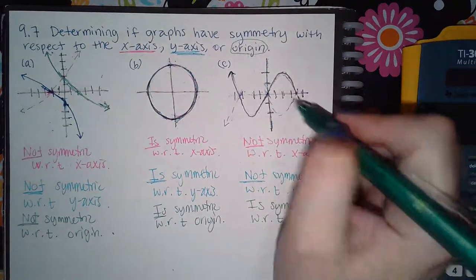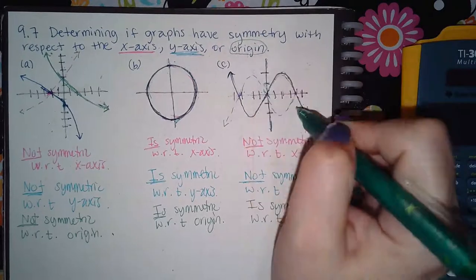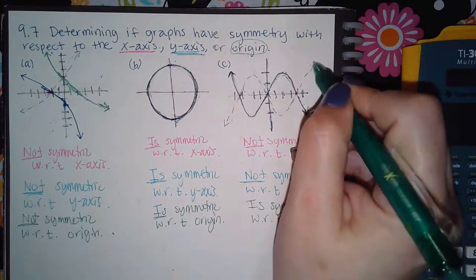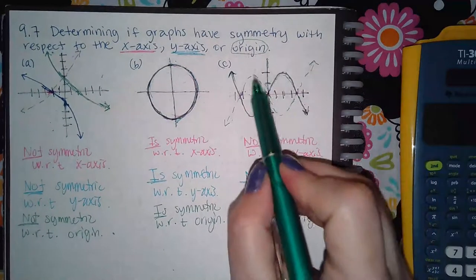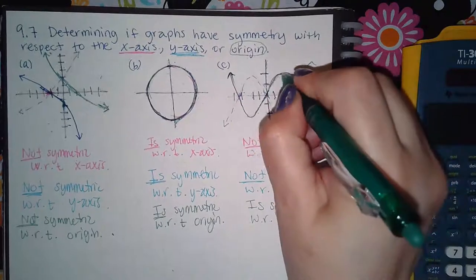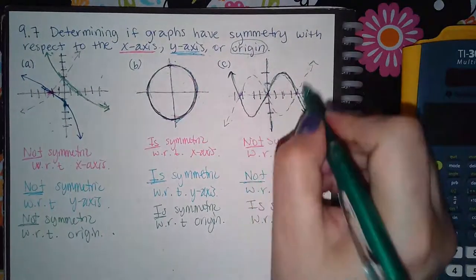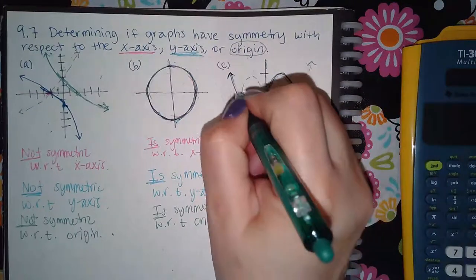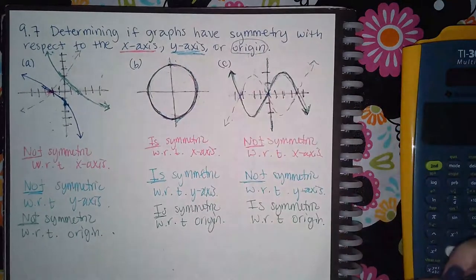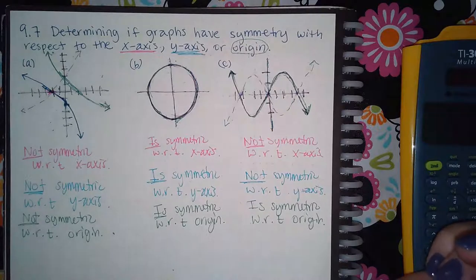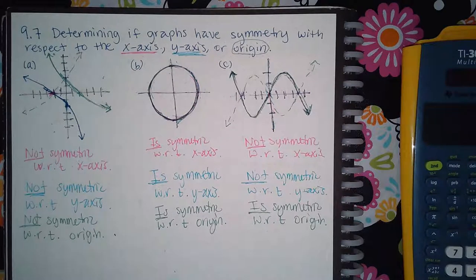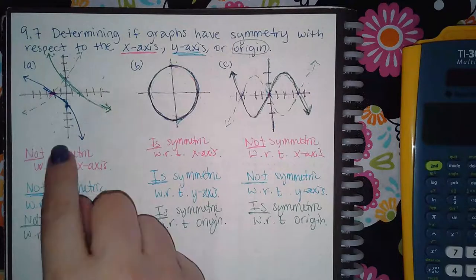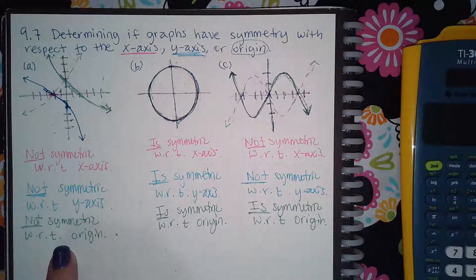For graph C: I flip it over the x-axis first — the top parts flip down and the bottom parts flip up. Then I flip it over the y-axis — the whole left side flips over and lands as a solid green line, and the right side flips over and turns into this graph. Did the solid green line land on top of itself? It did, so this one is symmetric with respect to the origin.